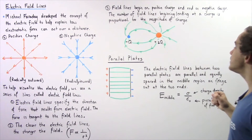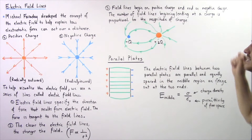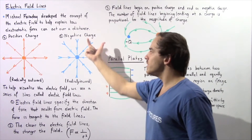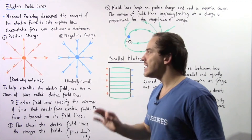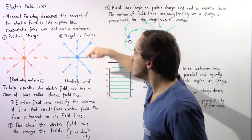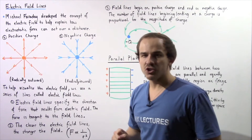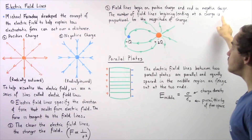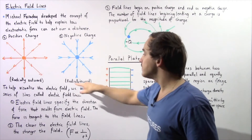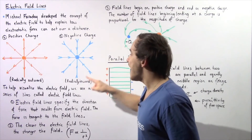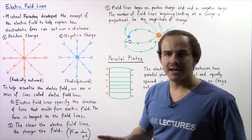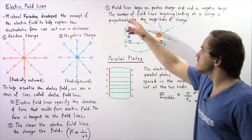This also tells us that field lines will end on the negative charge. Looking at diagram B, we have a negative charge with the same quantity of charge as the positive charge, but with a negative value. According to this statement, the field lines will end at this point, meaning field lines extend radially inward when dealing with a negative charge.